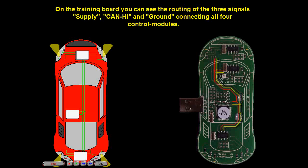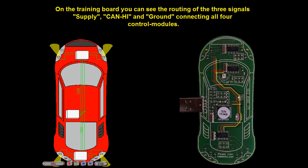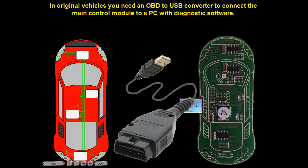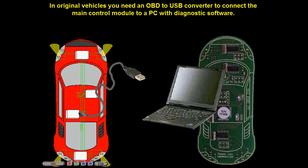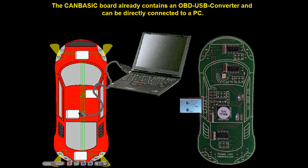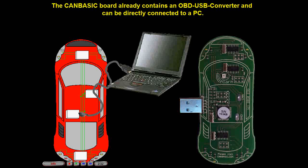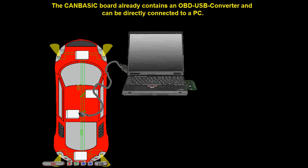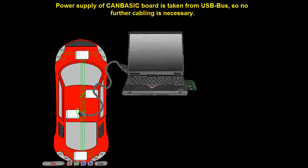On the training board you can see the routing of the three signals — supply, CAN-HIGH, and ground — connecting all four control modules. In original vehicles you need an OBD to USB converter to connect the main control module to a PC with diagnostic software. The CAN-BASIC board already contains an OBD to USB converter and can be directly connected to a PC. Power supply of the CAN-BASIC board is taken from the USB bus, so no further cabling is necessary.